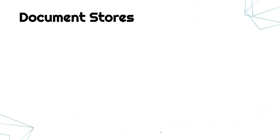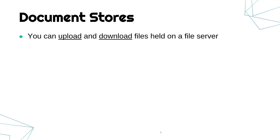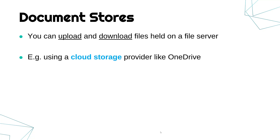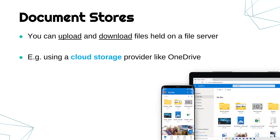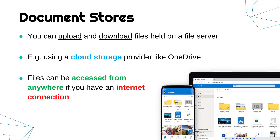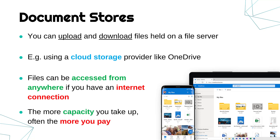Document stores are quite simple — these are websites which enable you to upload and then download files held on a file server the website operates. The best example is cloud storage, where your files are held somewhere else by a big company like Microsoft, in the case of OneDrive. Your files are stored there, you can share them, download them later, and access them from any device — which is the key benefit, as long as you have an internet connection. There's also a big capacity — pretty much unlimited for most people. But the more capacity you use, especially as a business, the more you end up paying, and it's a recurring monthly cost rather than a one-off.